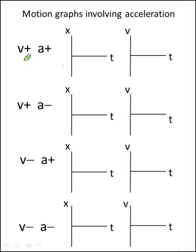The first case that we'll take a look at is an object moving with positive velocity and positive acceleration. So what do you think these two graphs are going to look like? We have position versus time and velocity versus time.